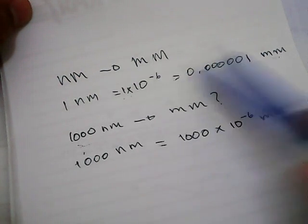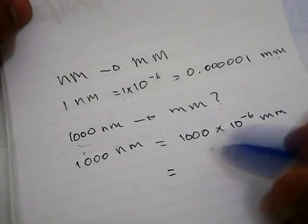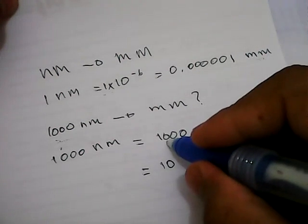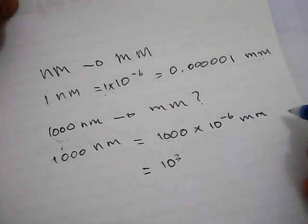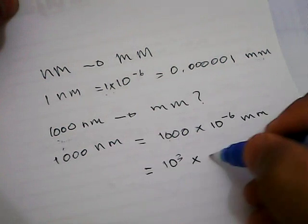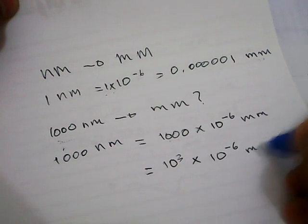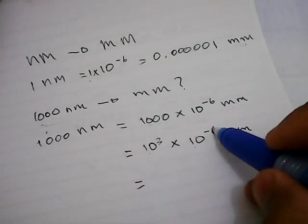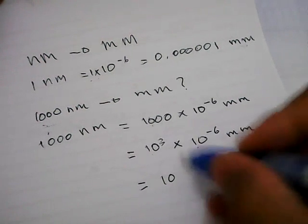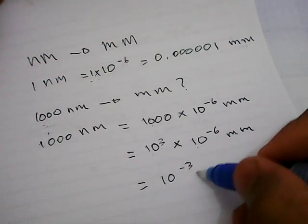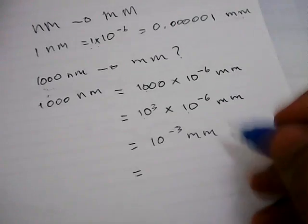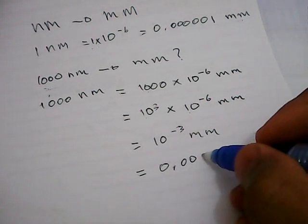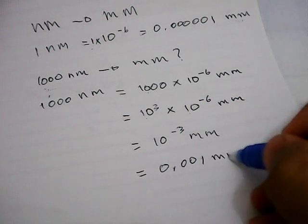Now let's change this number format. 1000 is 10 power 3, right? And then we multiply it with 10 power minus 6 millimeters. Then 10 power minus 6 plus 3 equals 10 power minus 3 millimeters. In another way, you can write this number with decimal: it is 0.001 millimeters.